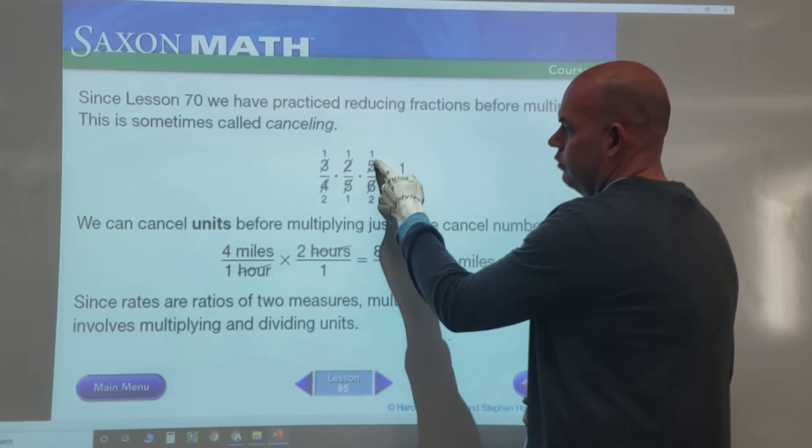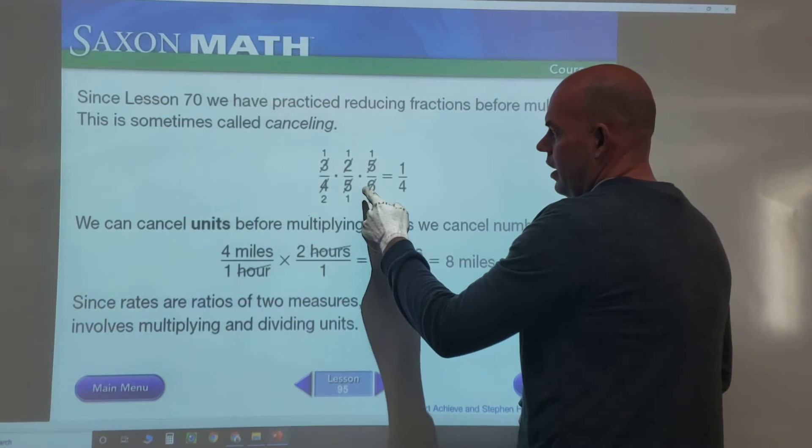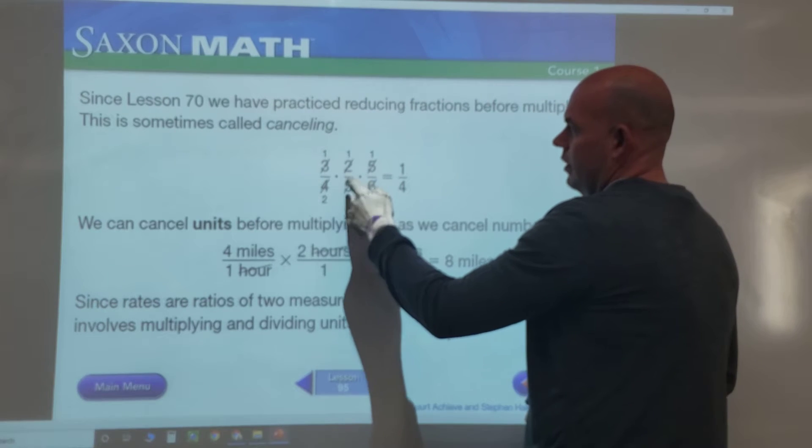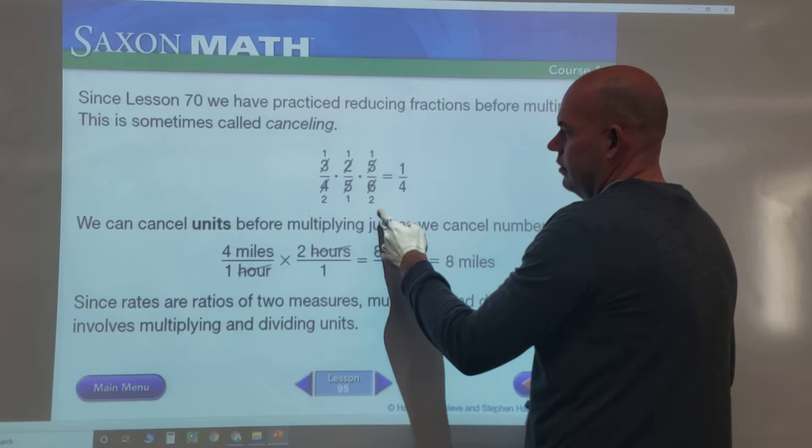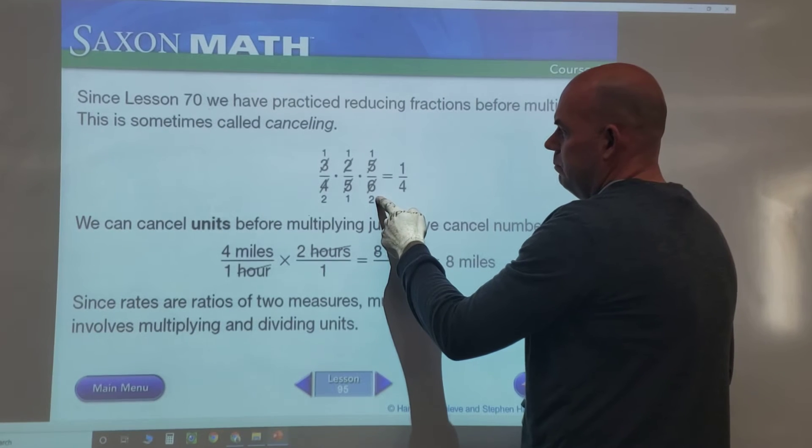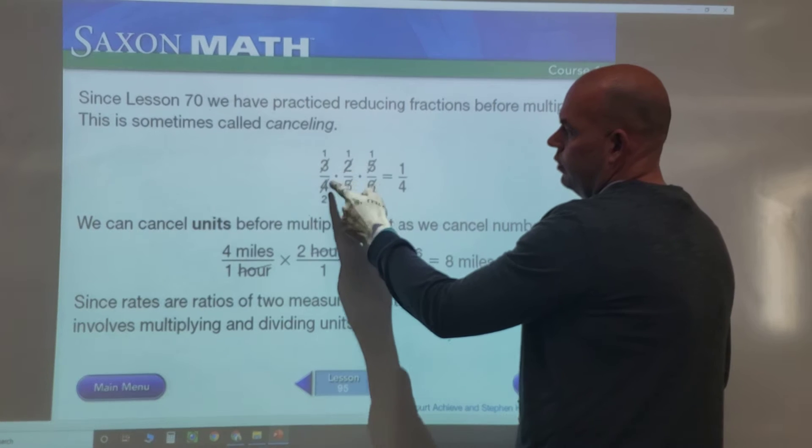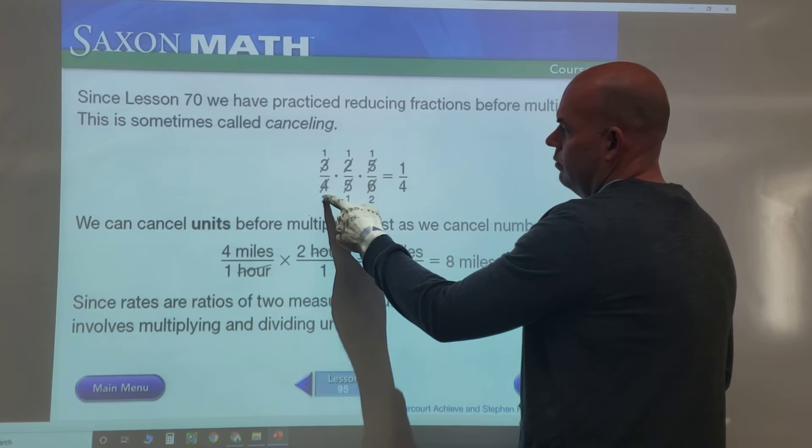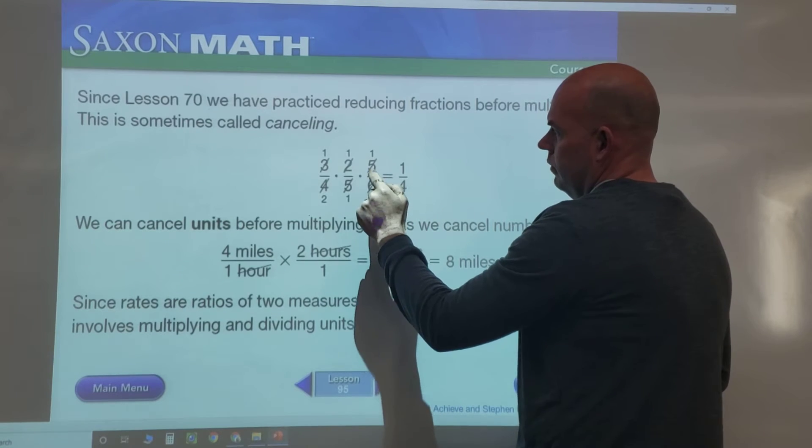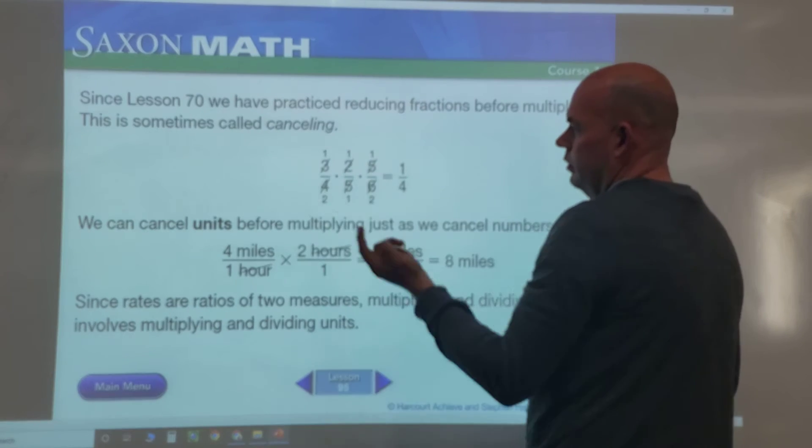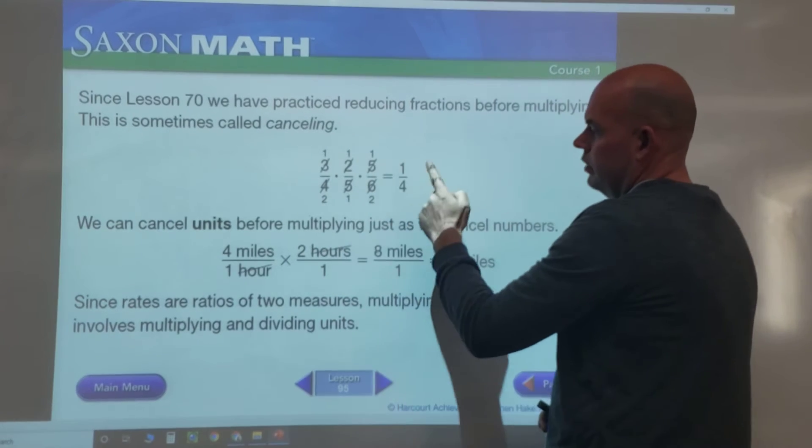Then we see that six and three can work because those are common factors. Three goes into three one time, three goes into six two times. Then the two and the four: two goes into four two times, and two goes into two one time. So we multiply 1 × 1 × 1 over 2 × 1 × 2.